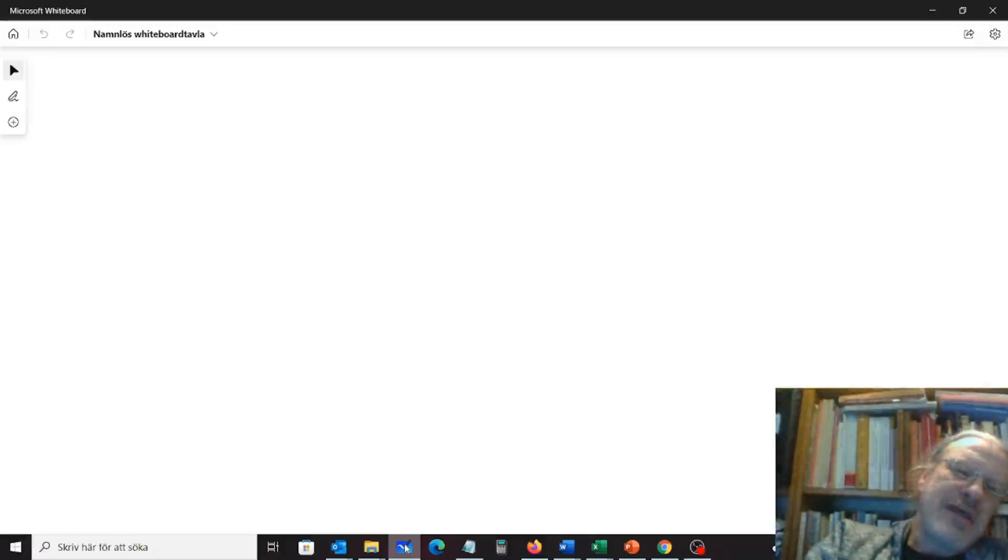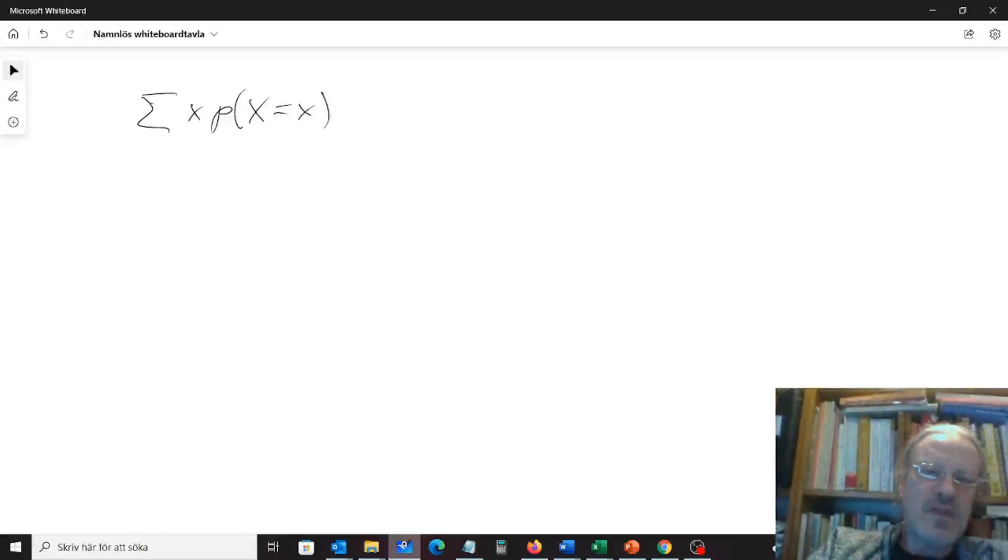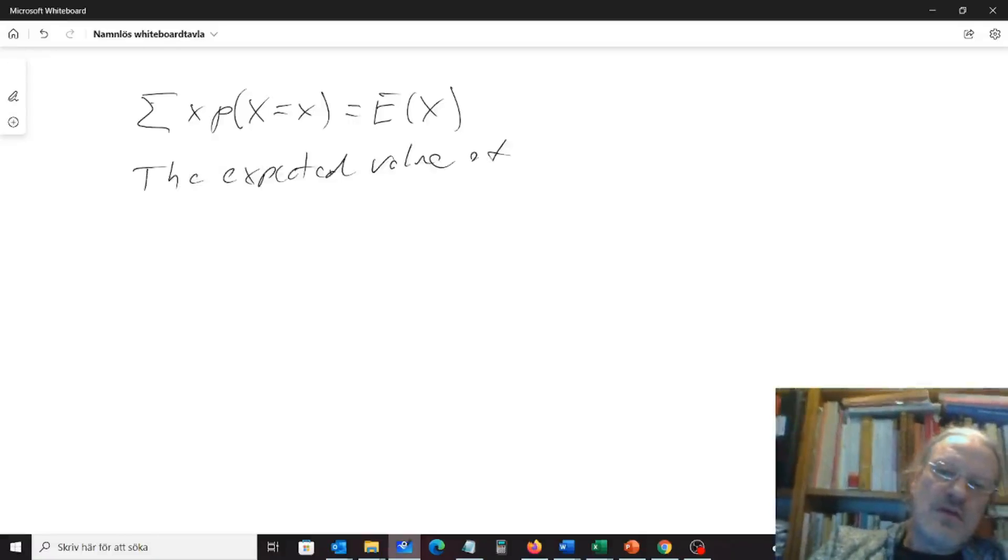We have that the theoretical average would be this sum of all the x's times the probability to get that x's, and now we have a way to write that, our random variable X happened to get the value x. So that will give us our theoretical average, and we will write this as E of our random variable capital X, and this is called the expected value of the random variable X, and that is the same as the theoretical average.